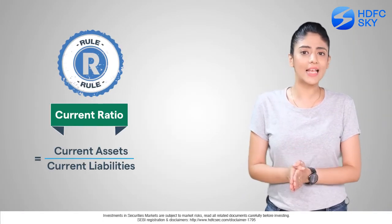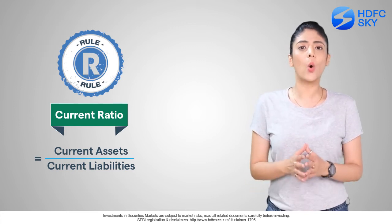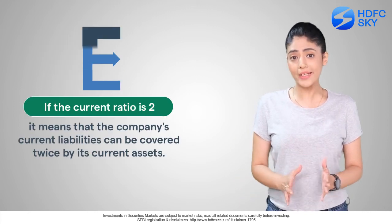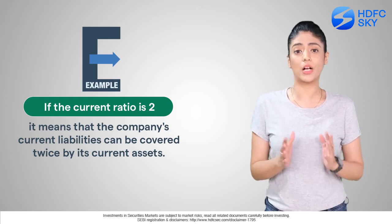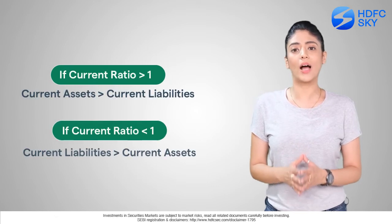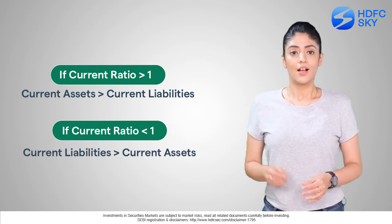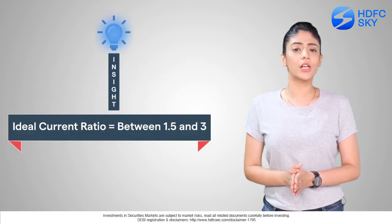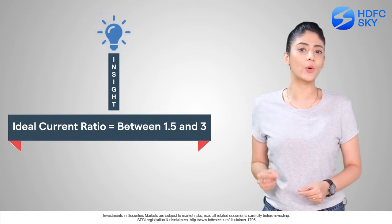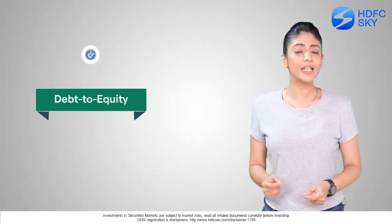Number five: Current Ratio. Current ratio provides insights into a company's ability to pay short-term obligations using only its current assets. The number indicates how many times current liabilities can be covered by current assets. A current ratio above one means the company has more current assets than liabilities. A ratio between 1.5 and 3.0 is generally considered healthy.